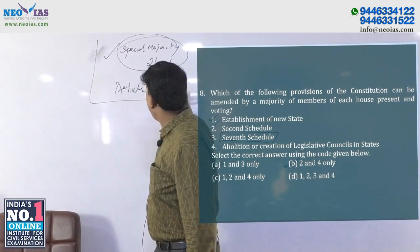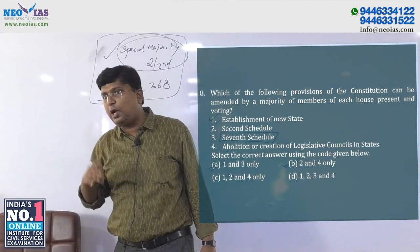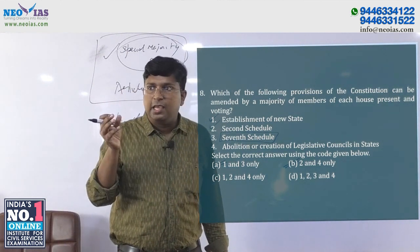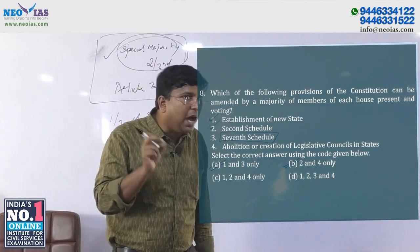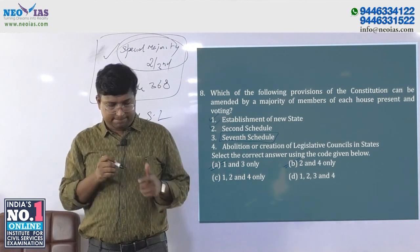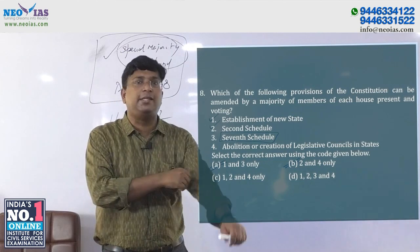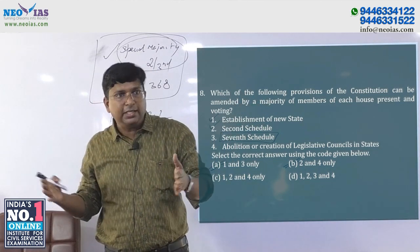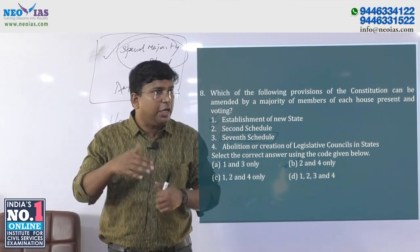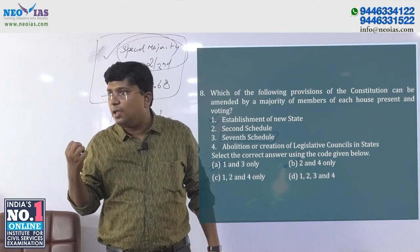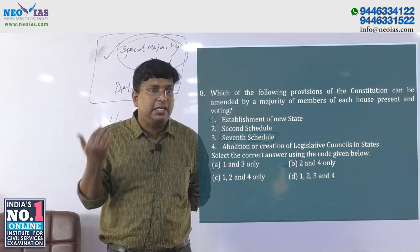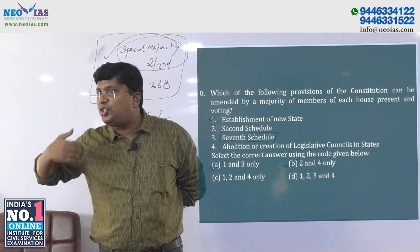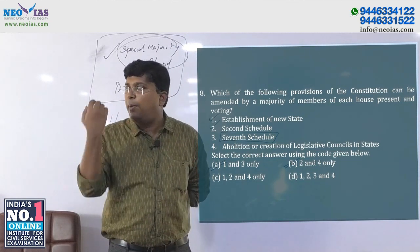Along with the passage of both houses of parliament, it requires approval of half of the state legislatures. This is an important point. For example, GST — to introduce Goods and Services Tax, a constitutional amendment was required. GST affects federal features: specifically, the financial power distribution between the center and states.